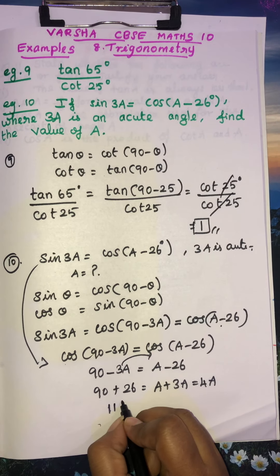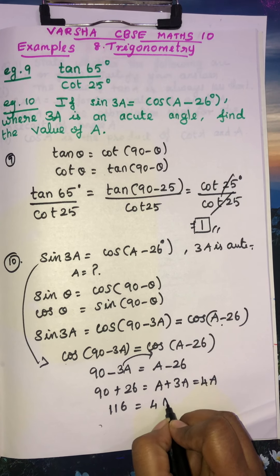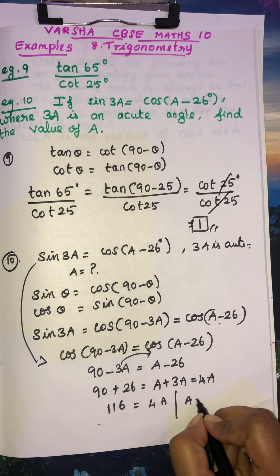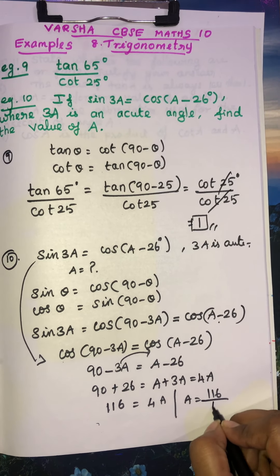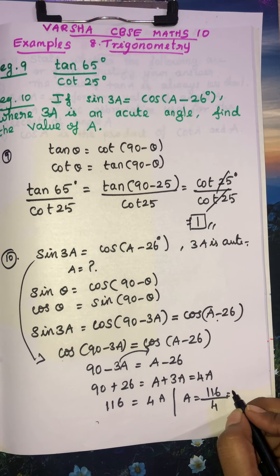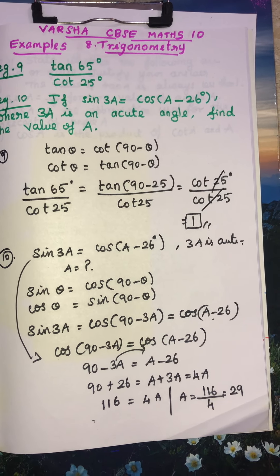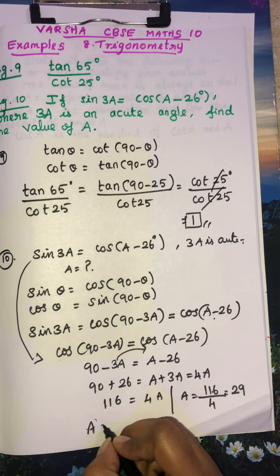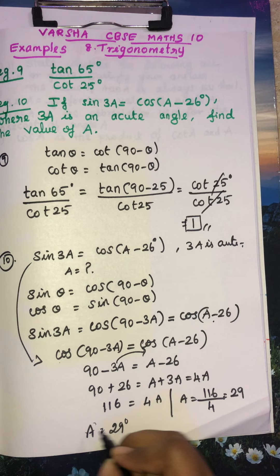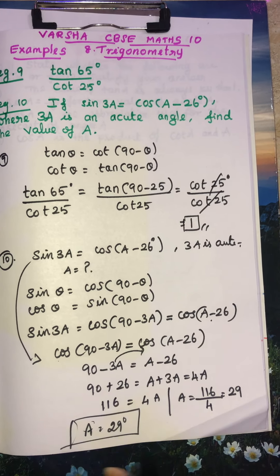So here if you add you will get 116, this is 4a. So if you cancel for a 116 by 4, 2 2s are 8, 3 2s are 12, so 9 4s are 26. So the degree a is 29 degree. So this is your answer.